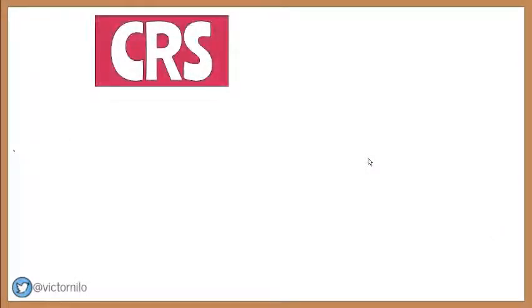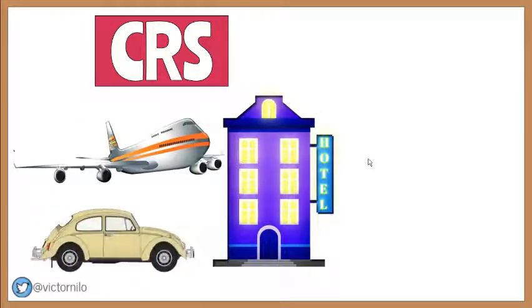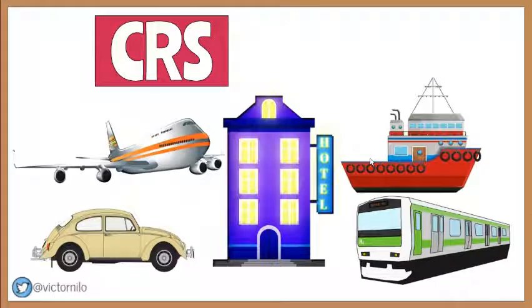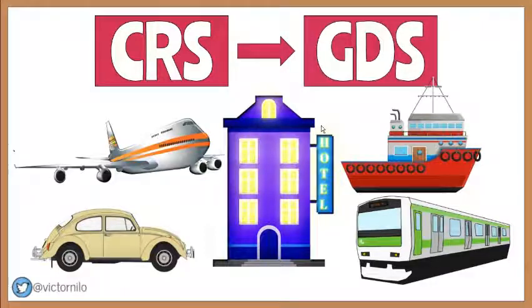The CRS has also evolved into a system that provides real-time availability, price, and offers of airlines, hotels, rental cars, cruises, ferry reservations, trains, and other services for travel agencies to sell. This advanced system is now widely known as the Global Distribution System or GDS.